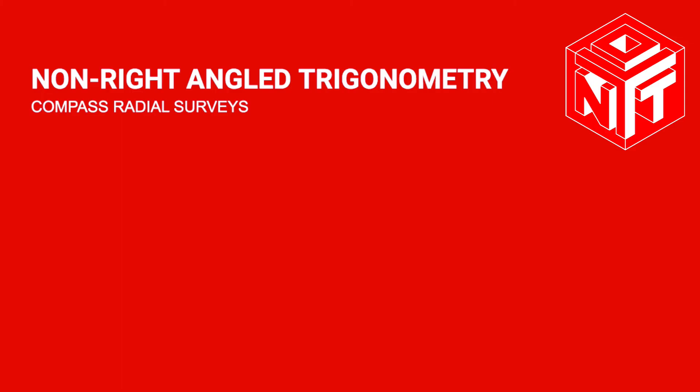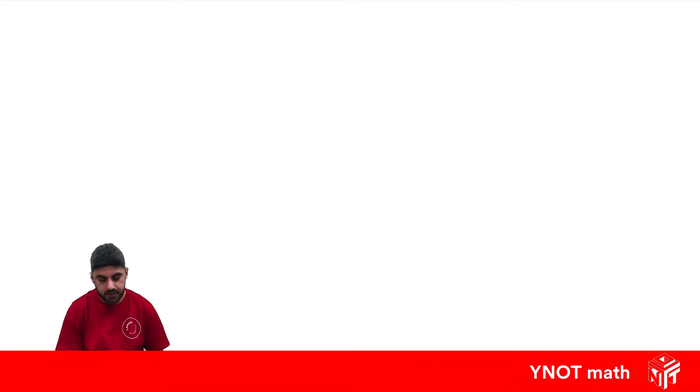Compass radial surveying is a method of surveying using true bearings and lengths to map out an area. So let's have a look at one. It's going to start with a north direction and then...